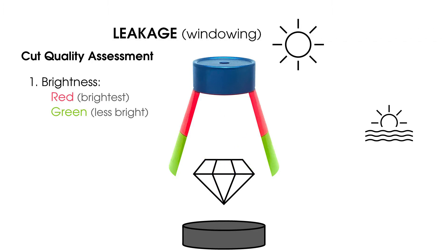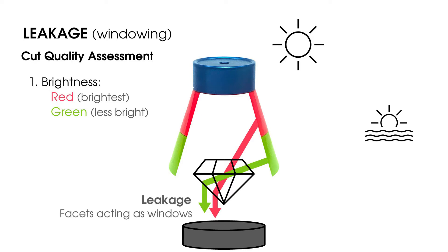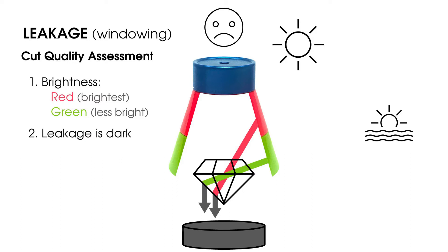Alternately, if light escapes through the bottom of the stone, that's leakage. It means the facets are acting like windows instead of mirrors. A viewer looking through the lens sees through the bottom of the diamond to the dark receptacle underneath. So in Asset cut quality assessment, leakage is dark.